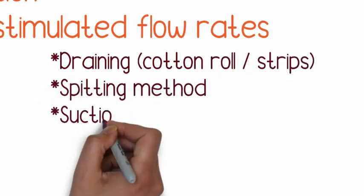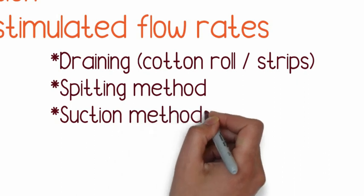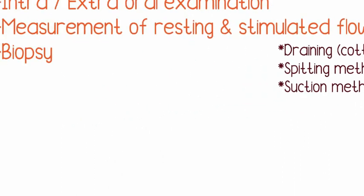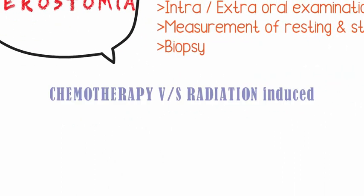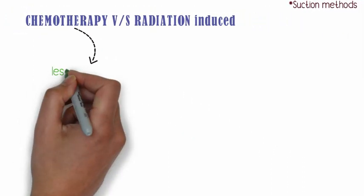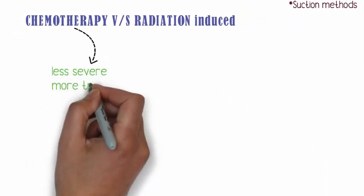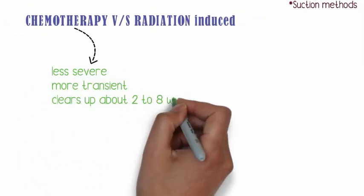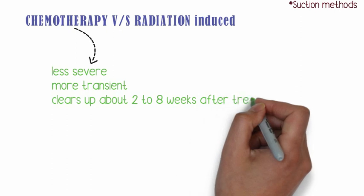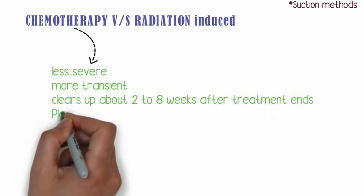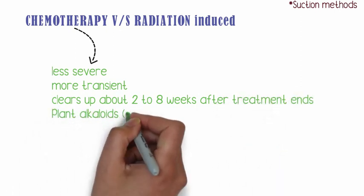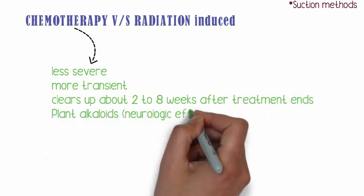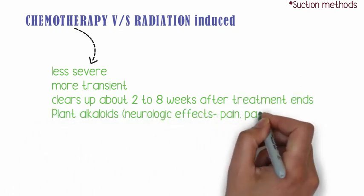When comparing the two, the lesser evil is chemotherapy-induced xerostomia. It is less severe, lasts for a shorter time, goes away five to six weeks after the patient stops taking the drug, and is most commonly seen with plant alkaloids.